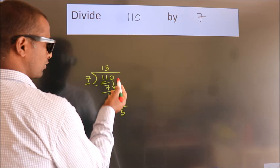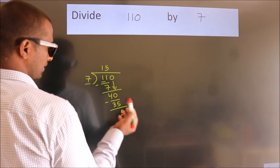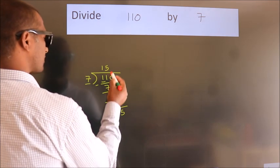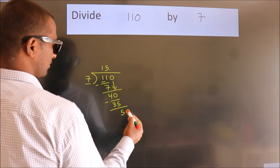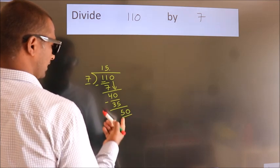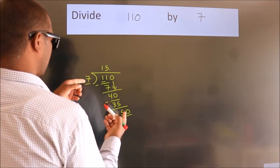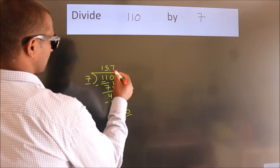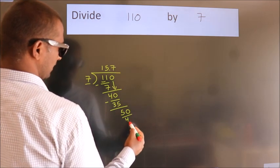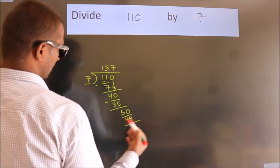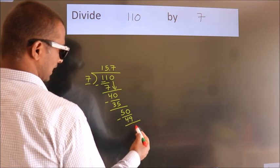After this, no more numbers to bring down. So what we do is we put a dot and take 0. So 50. A number close to 50 in the 7 table is 7 sevens 49. Now we subtract. We get 1.